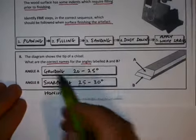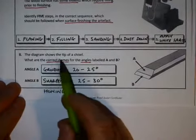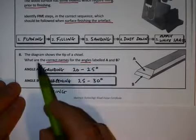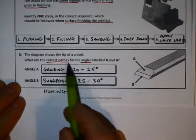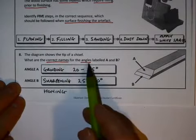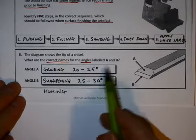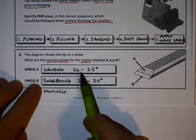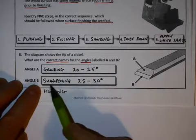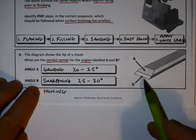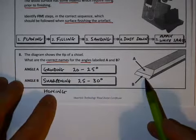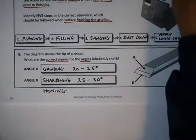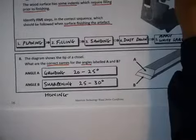The diagram shows the tip of a chisel. The correct names for the angles labeled A and B are: A is the grind angle at 20–25 degrees, and B is the sharpening angle, sometimes also called the honing angle.